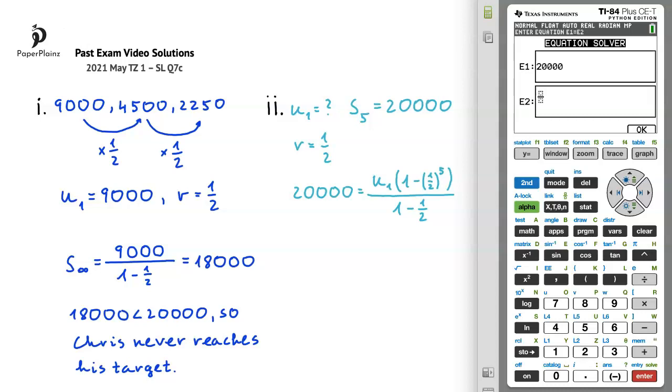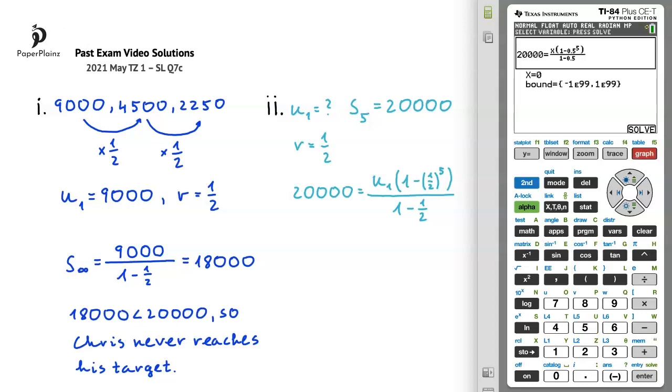u1 is the unknown that we are looking for, so I will denote this by x. Then I will open the parentheses and write 1 minus 1 half to the power of 5, or 0.5 to the power of 5. Then I will close the parentheses and move into the denominator. Here we have 1 minus 1 half, so 1 minus 0.5. Once we have entered everything correctly, we'll press graph twice to get the answer.